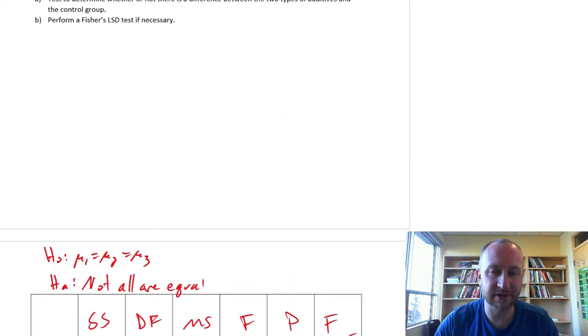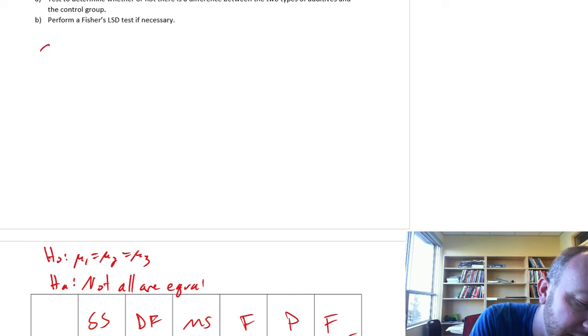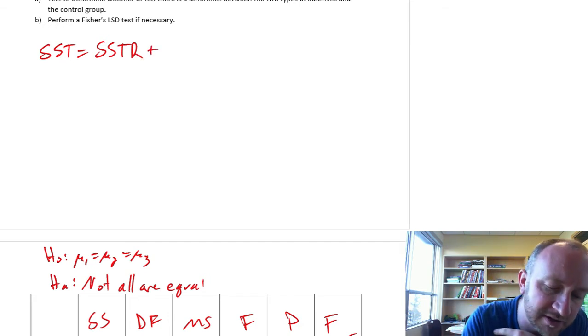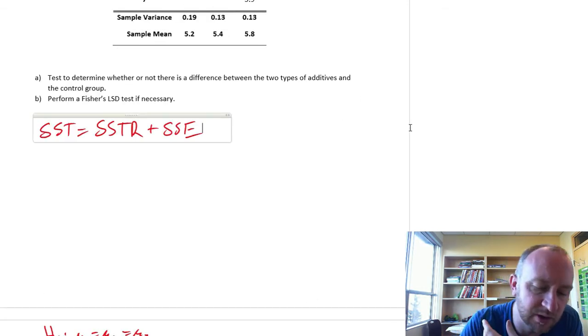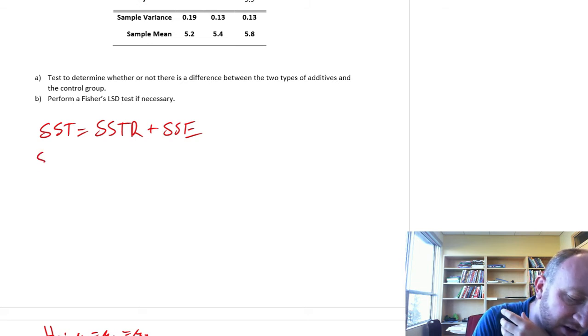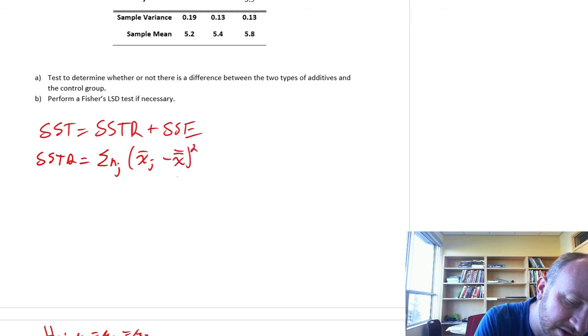Now we can get into this partitioning of the variation. Same idea, SST. We split that total variation, the total sum of squares, we divide it into its two sources, treatment and error. So let's go through and calculate SSTR first. Of course we're still missing actually one piece of information, and you'll see that as soon as I write this formula down. We need that grand mean first.